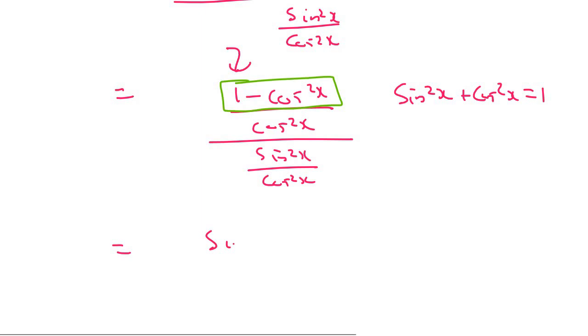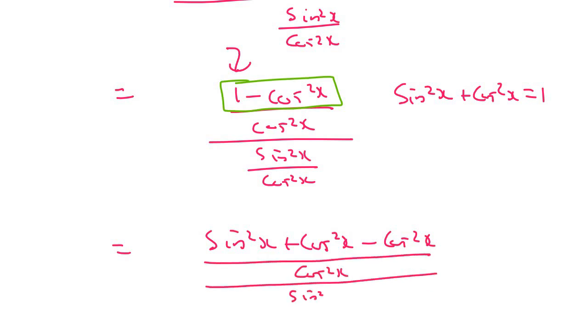It works. Check this out: sin²x plus cos²x minus the cos²x that's already there, over cos²x, and then over sin²x over cos²x. So cos²x cancels.